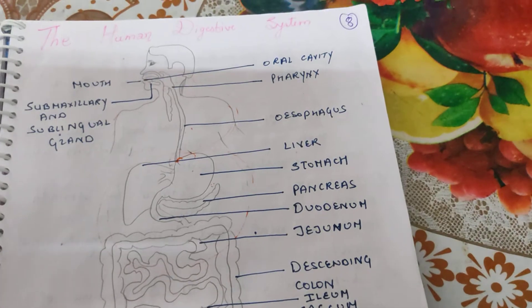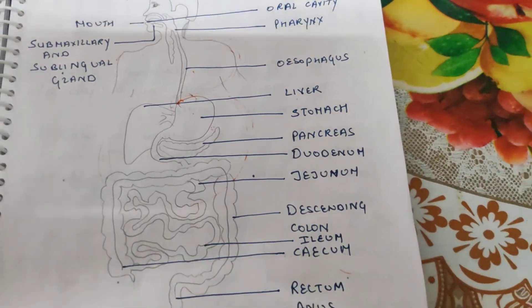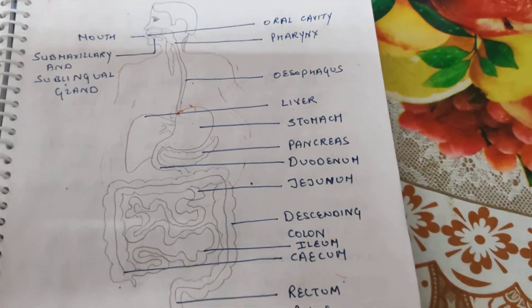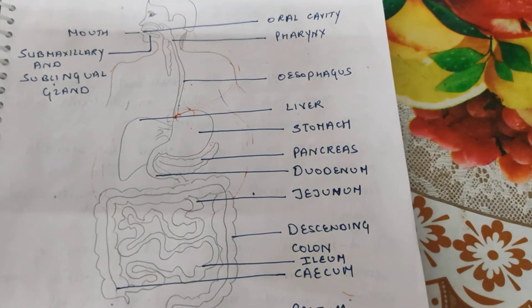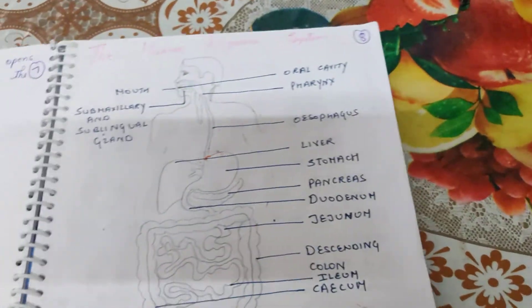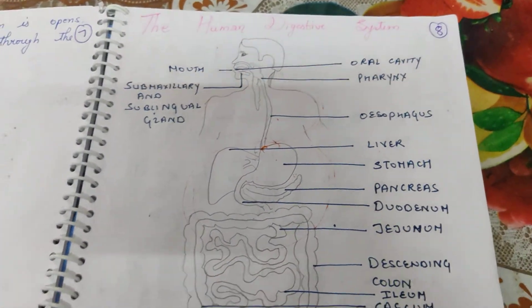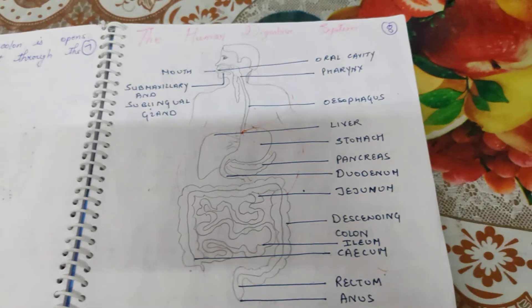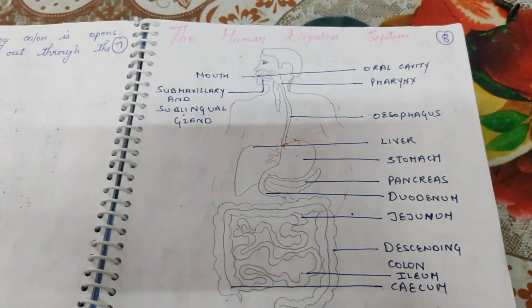This is the whole diagram of the human digestive system, starting with the mouth and ending with the anus. Please complete your notes and revise this topic as well. Thank you.